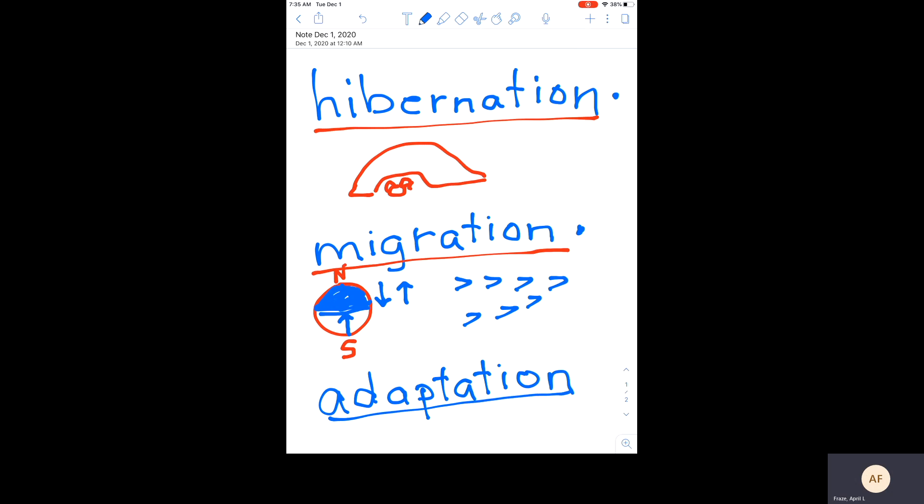So we have hibernation, migration. And finally, there are some animals who do not migrate and who do not hibernate, but that adapt. That's called adaptation.